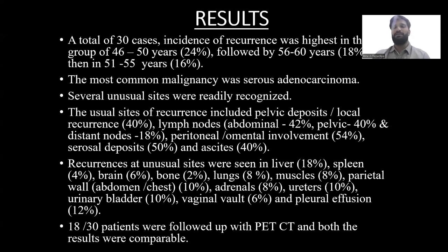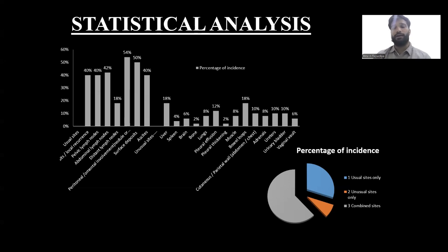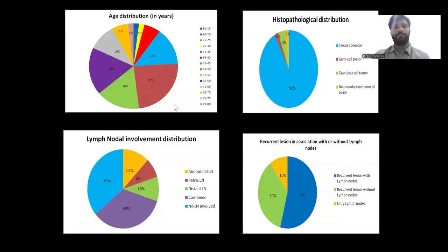Recurrence at unusual sites was seen most in the liver, then brain, lungs, adrenals, ureters, etc. 18 out of 30 patients were followed up with PET in our institute, with comparable results. In statistical analysis, peritoneal and omental involvement were most common, while bone involvement and pleural thickening were least common — as seen with L3 and L4 vertebrae involvement in one case. Combined sites were most commonly involved in recurrence. Age distribution showed the highest frequency at 46 to 50 years, and the least in the very old (79 to 80 years) or very young (10 to 15 years) age groups.